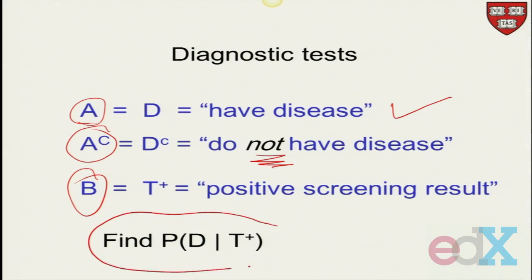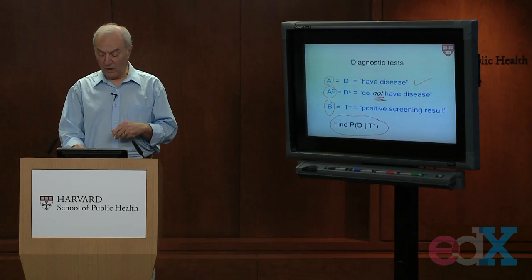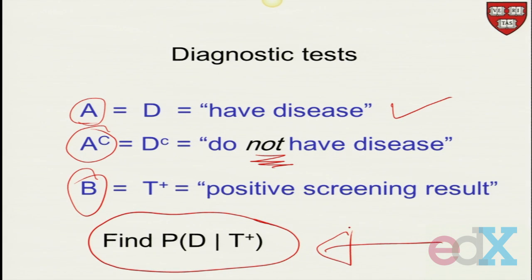So now we want to know, what is the probability of the disease given that the person has tested positive for the disease? Now, it sounds like a silly question. If we've got a perfect test, then this should be one. But what makes this very complicated is that we do not have perfect tests. Our typical biological tests are all imperfect.